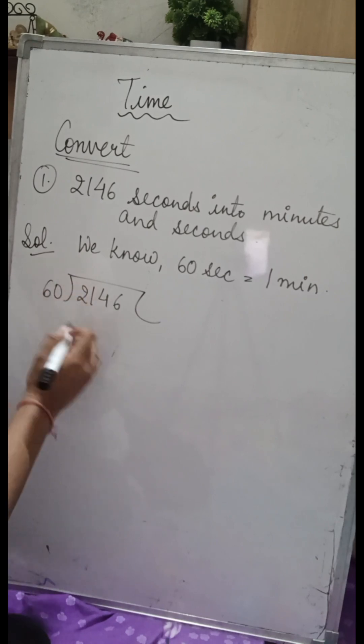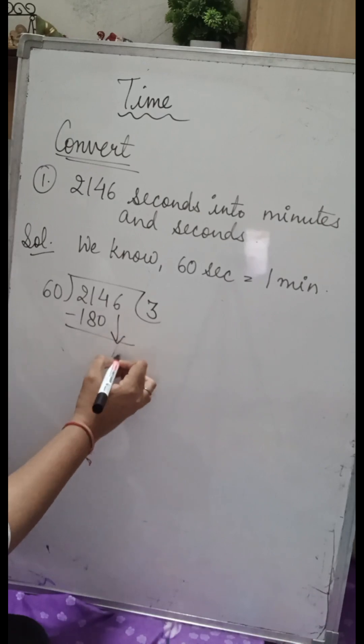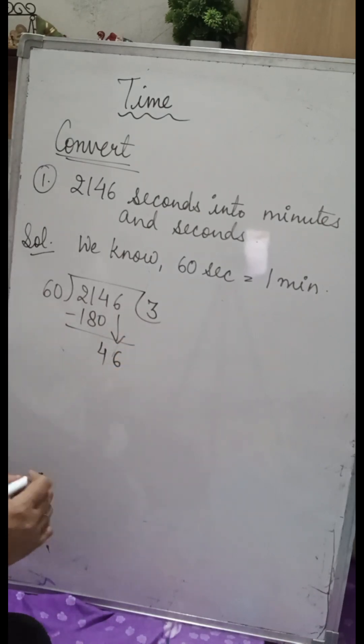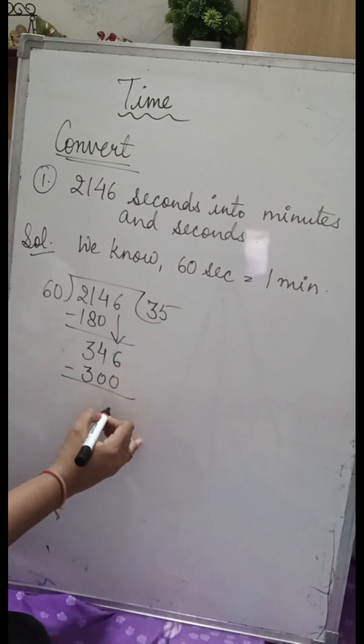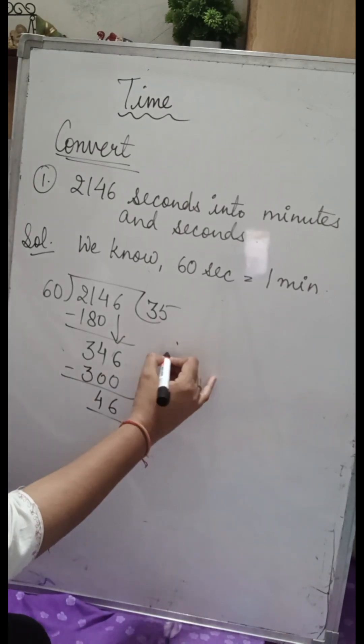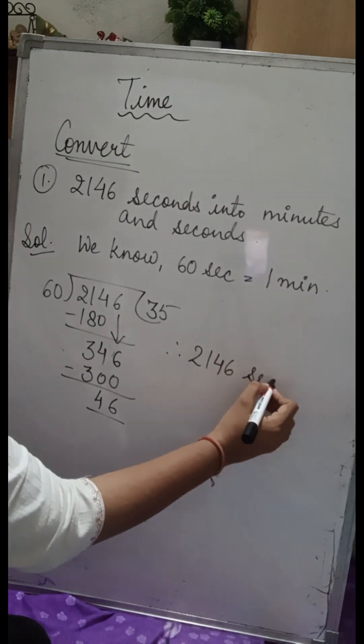In this question we are asked to convert 2146 seconds into minutes and seconds. We know 60 seconds equals one minute. What we have to do is divide the given seconds, 2146, by 60.